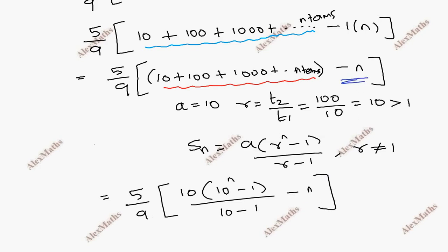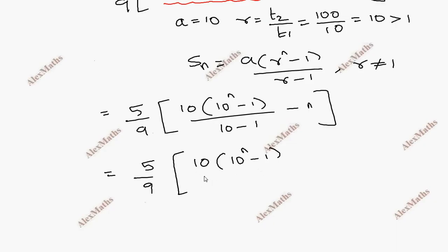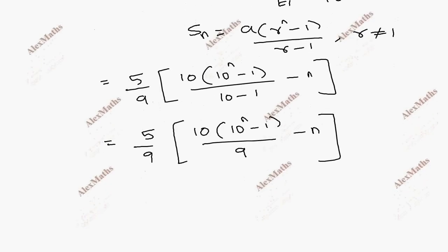Simplifying further, we get 5 by 9 times 10 into 10 power n minus 1 by 9, minus n. This is the final answer.